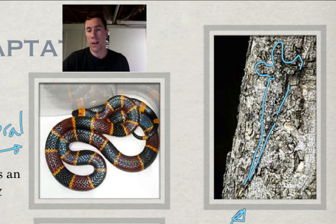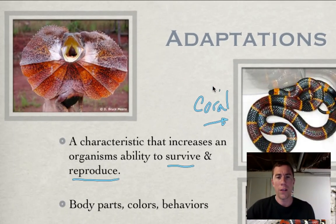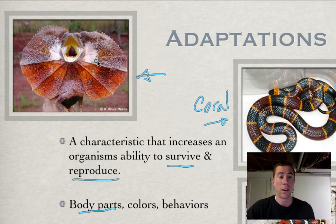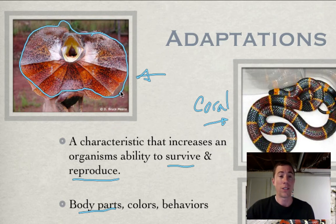If you're camouflaging into your environment, you're much more likely to survive and reproduce. Another way organisms can adapt is by growing body parts or structures that may intimidate other organisms. This lizard here, when it feels intimidated, will flare out this flap. This makes the lizard look much bigger than it actually is, which can intimidate a predator and hopefully help it survive.